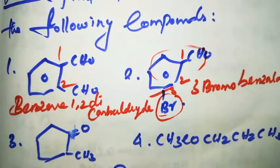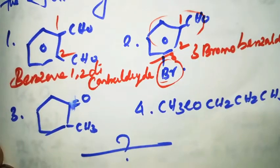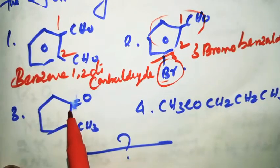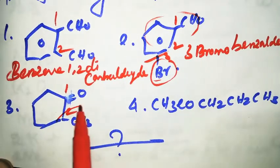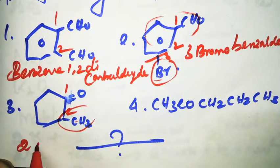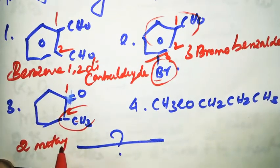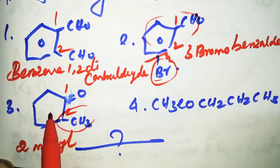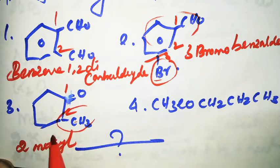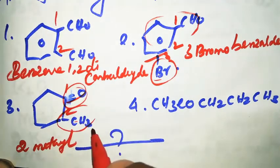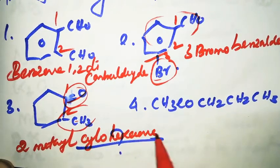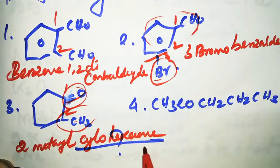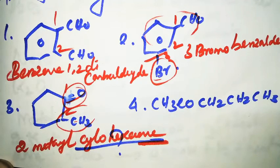The third compound has a ketone functional group. The numbering system gives position two a methyl group. It is not benzene — it is a cyclo six-membered ring, so the name is 2-methylcyclohexanone.